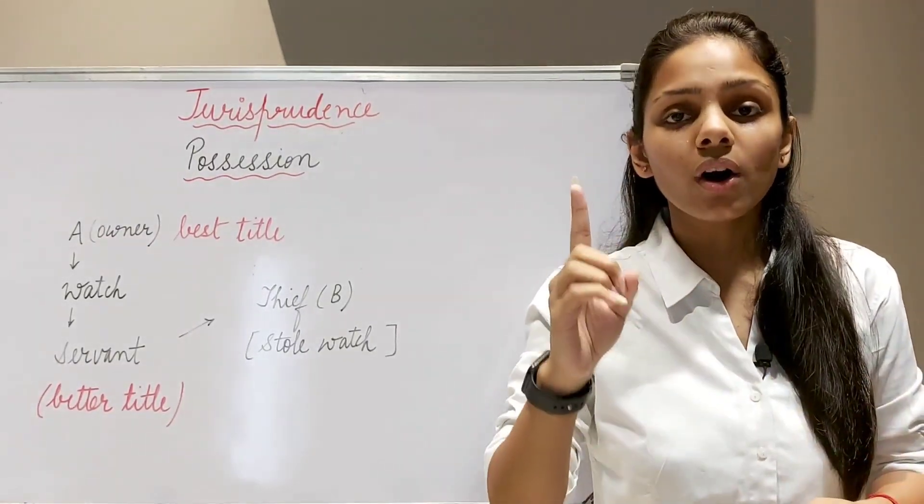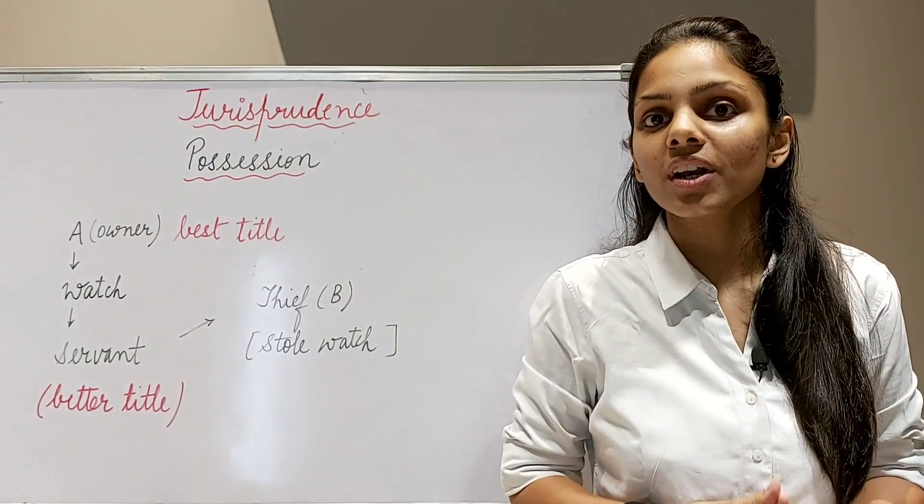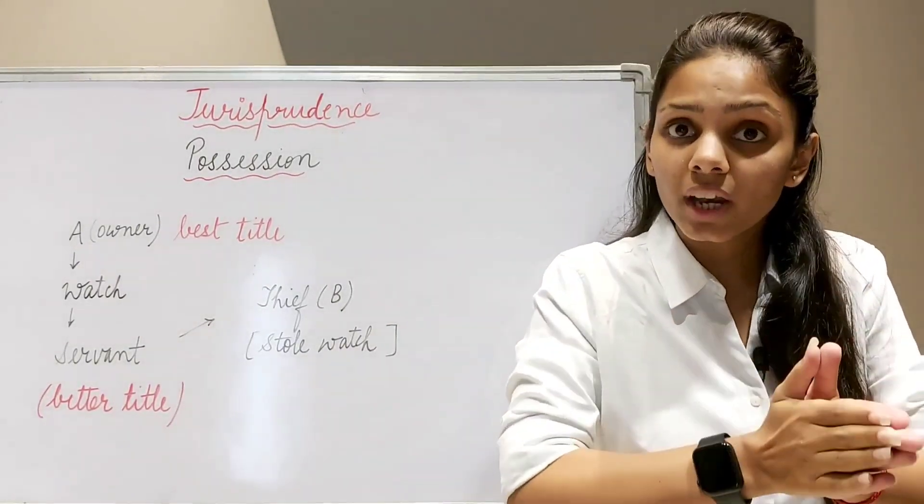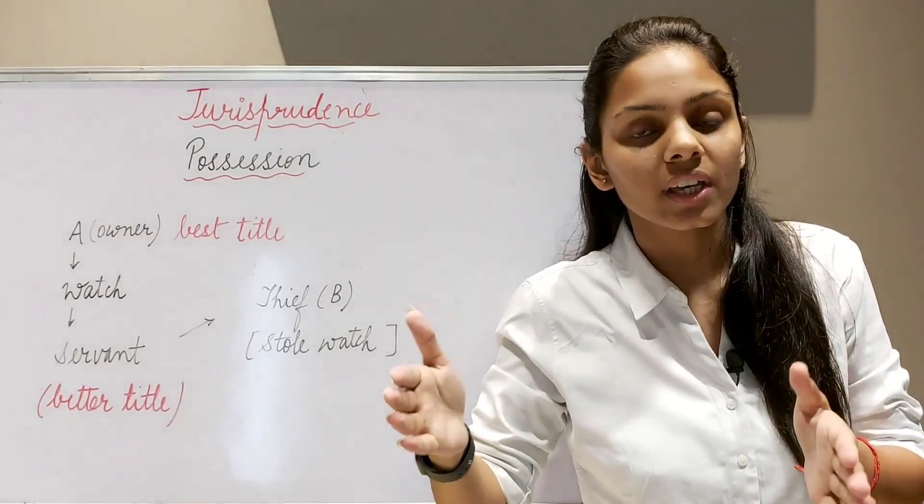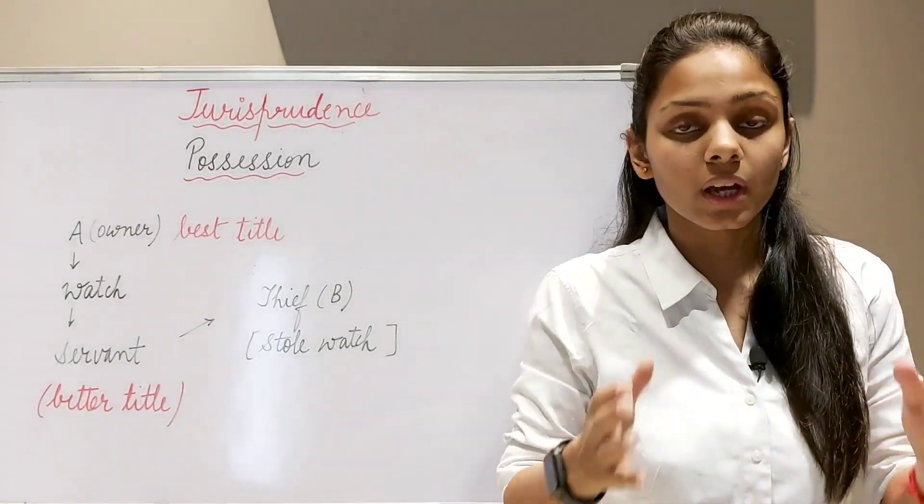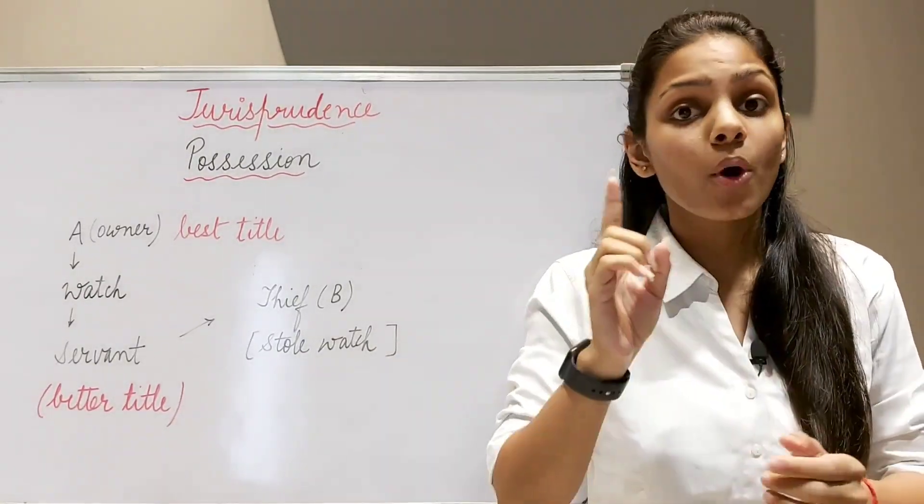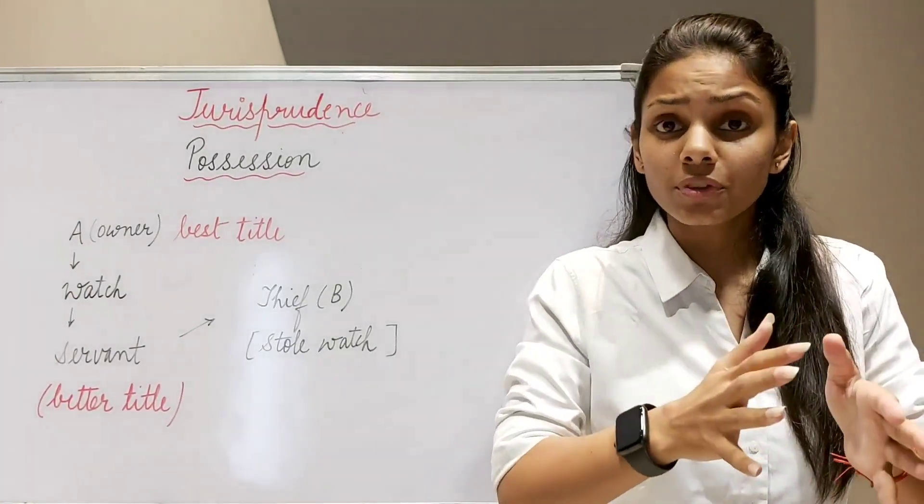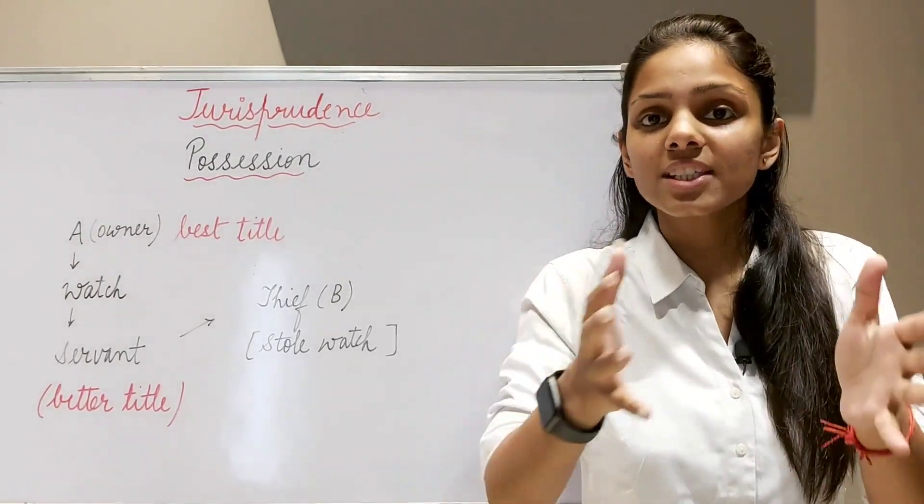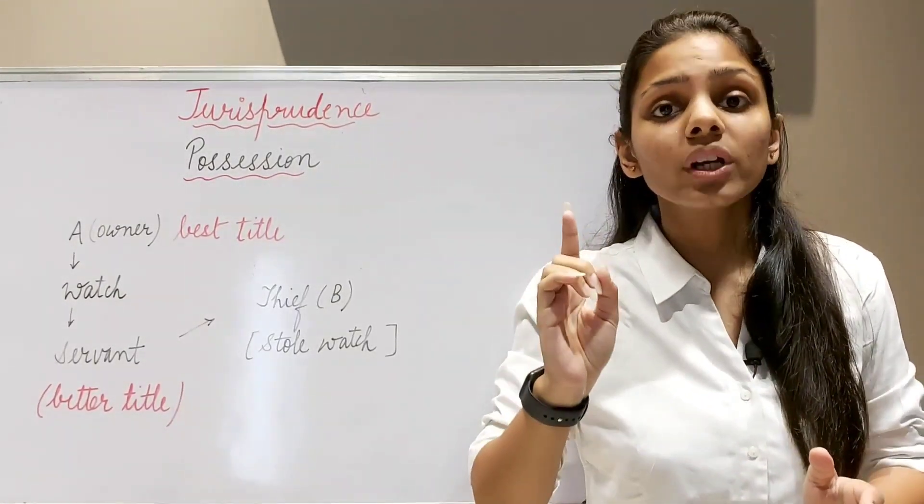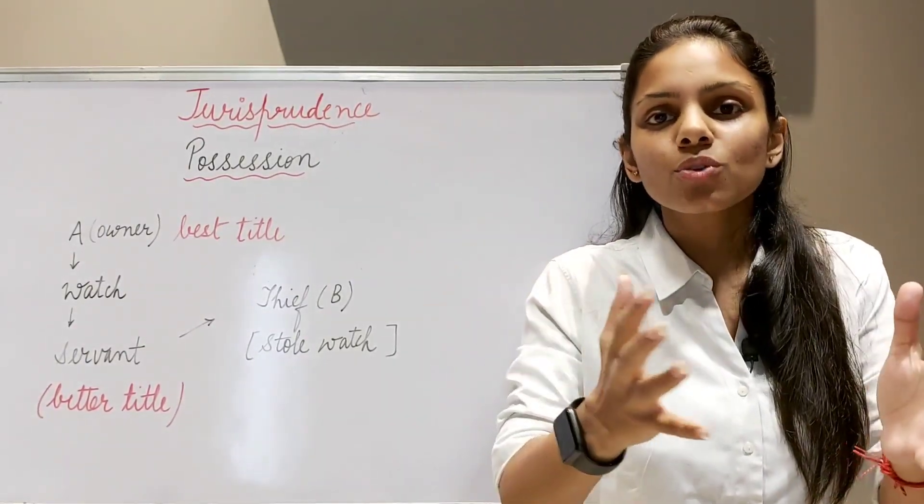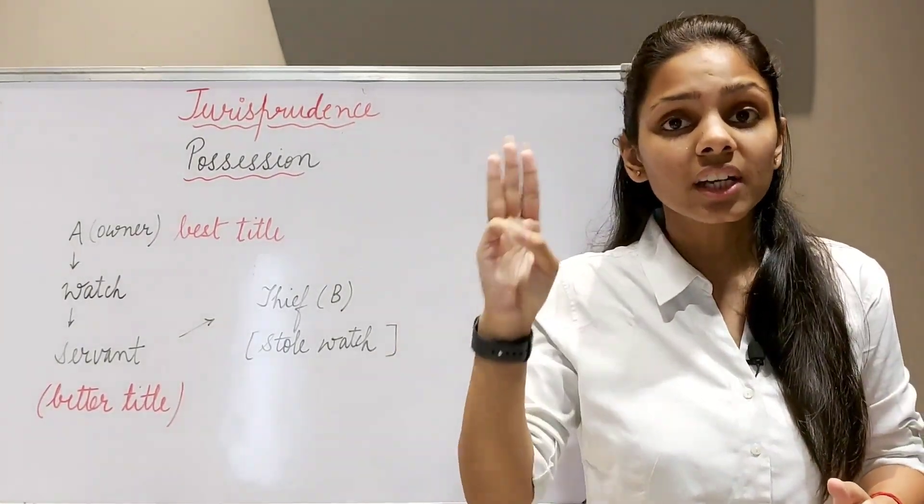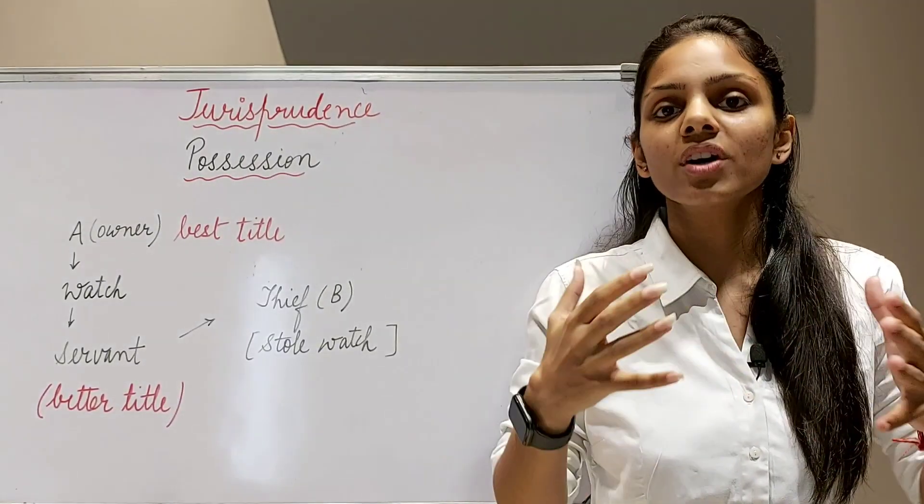Moreover, it is said that a long continuous and an uninterrupted possession is an effective means of realization of ownership. It means guys possession and ownership both are very related. Possession comes first and ownership you will get subsequently. The best example of this is adverse possession, which shows that possession converts into ownership.